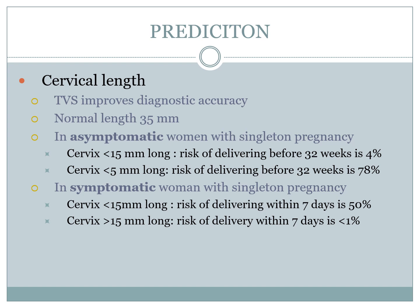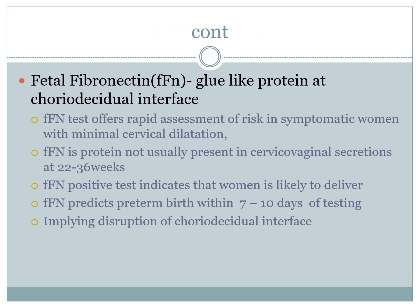In symptomatic women with a singleton pregnancy, a cervix less than 15 mm carries a 50% risk of delivering within 7 days, while a cervix more than 15 mm carries less than 1% risk of delivery within 7 days. Fetal fibronectin is a glue-like protein at the chorio-decidual interface that offers rapid risk assessment in symptomatic women with minimal cervical dilatation. It is not usually present in cervical vaginal secretions at 22 to 36 weeks. A positive test indicates the woman is likely to deliver, predicting preterm birth within 7 to 10 days and implying disruption of the chorio-decidual interface.